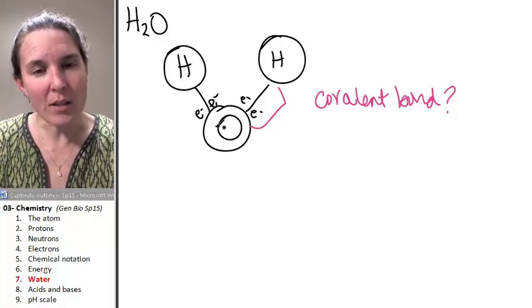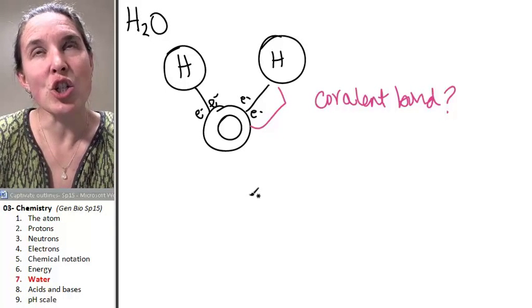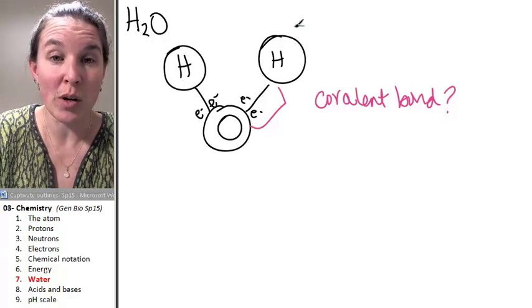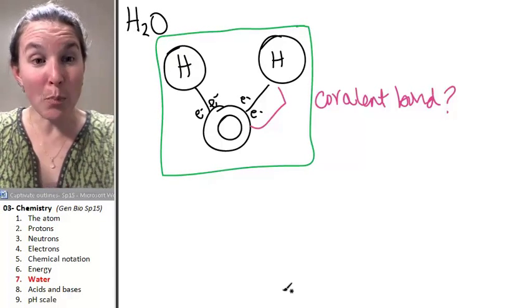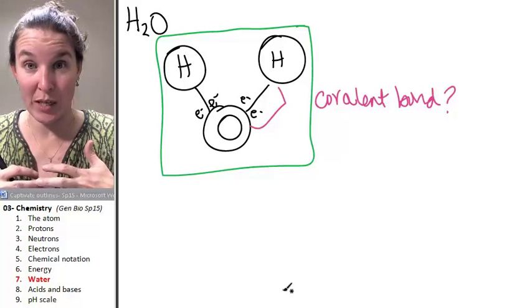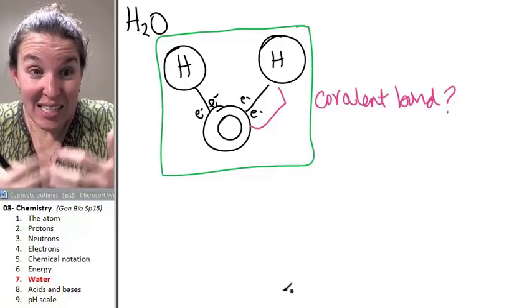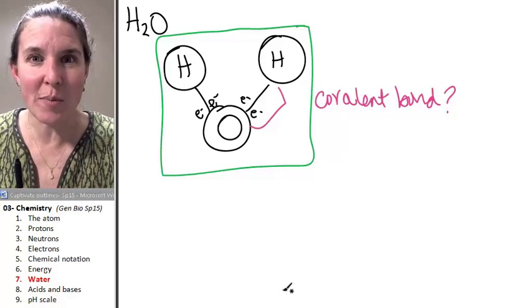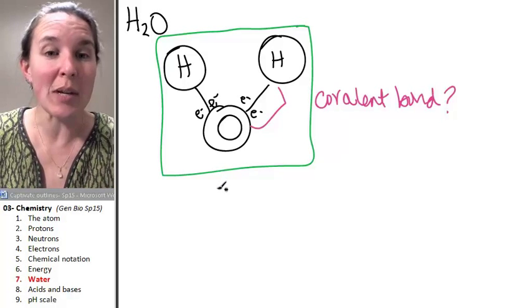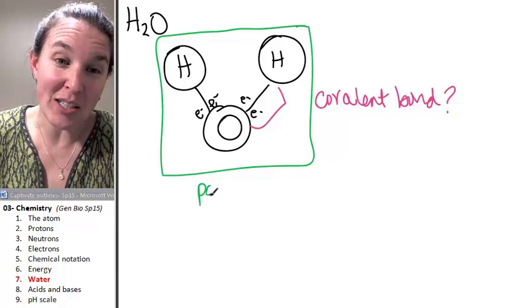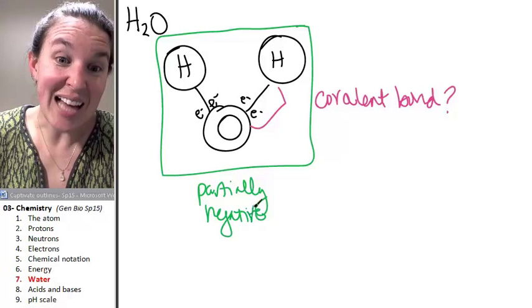If oxygen is hogging the electrons, tell me about the charge of oxygen when compared to the entire water molecule. Do you agree that it's pulling the negative charges more closely to it? The oxygen has chemical properties that cause that to happen. It's stickier for those electrons. It hangs onto them tighter. It hogs the electrons, which means it has more electrons surrounding it, which means that it is kind of a partially negative side of the molecule.